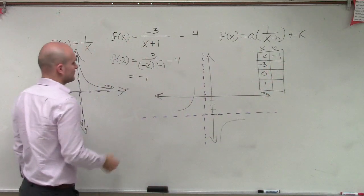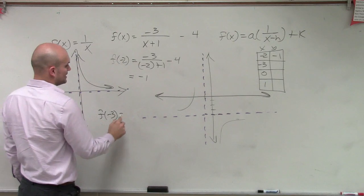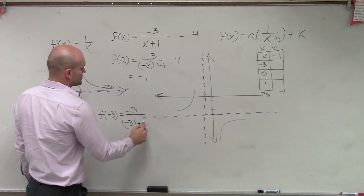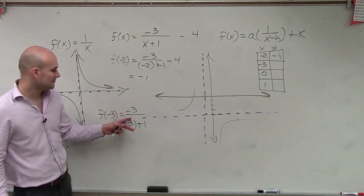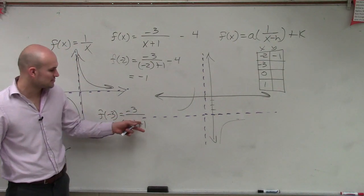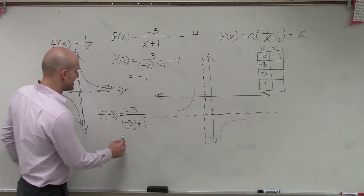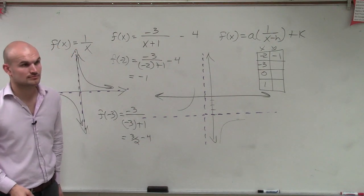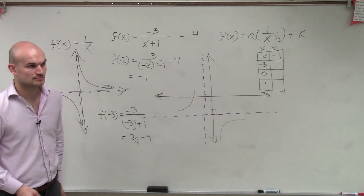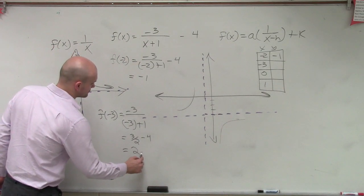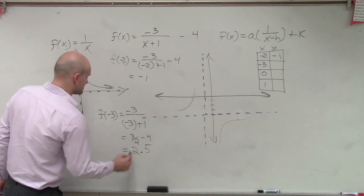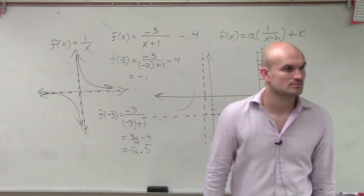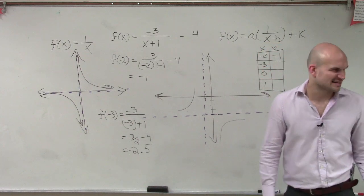Now let's do negative 3. So I'll do f of negative 3 equals negative 3 divided by negative 3 plus 1. Well, negative 3 plus 1 is negative 2. Negative 3 divided by negative 2 is a positive 3 halves. Minus 4 is going to be 2.5. Oh, minus 2.5? Yes. Roughly, I'm just keeping a decimal to keep it up there.